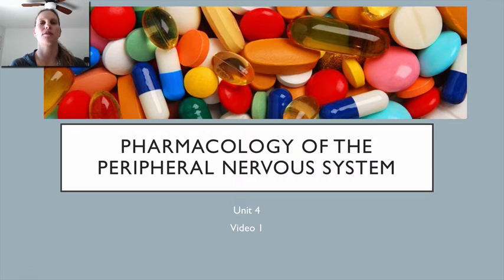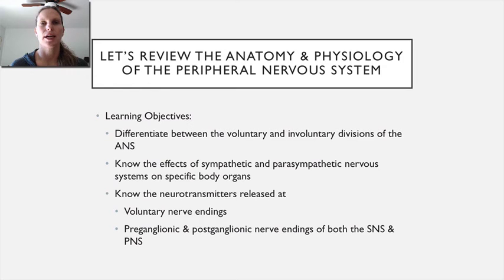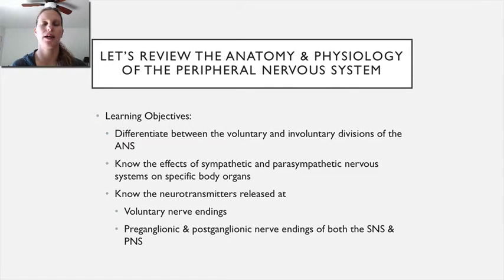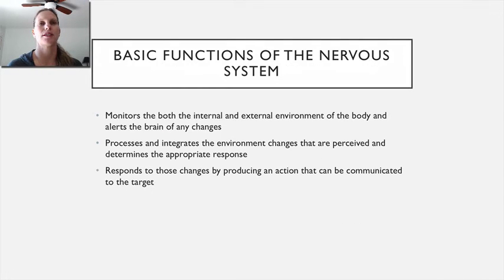The first few videos are going to be a review of the autonomic nervous system — specifically autonomic physiology — and then we'll move into the drugs later on. Our learning objectives: by the end of these introductory videos, we should clearly differentiate between the voluntary and involuntary divisions of the autonomic nervous system, understand sympathetic and parasympathetic responses at specific body organs, and know the neurotransmitters released at voluntary nerve endings and at the preganglionic and postganglionic nerve endings.